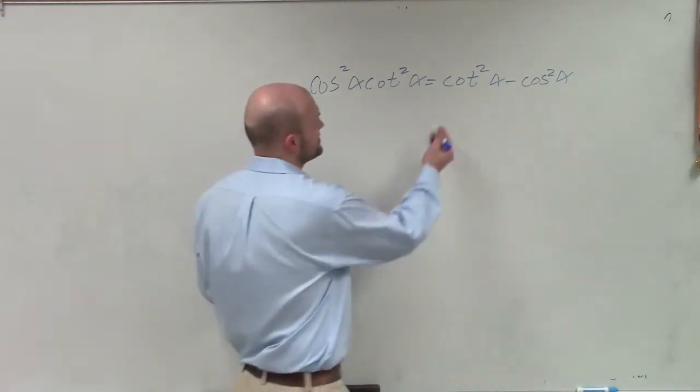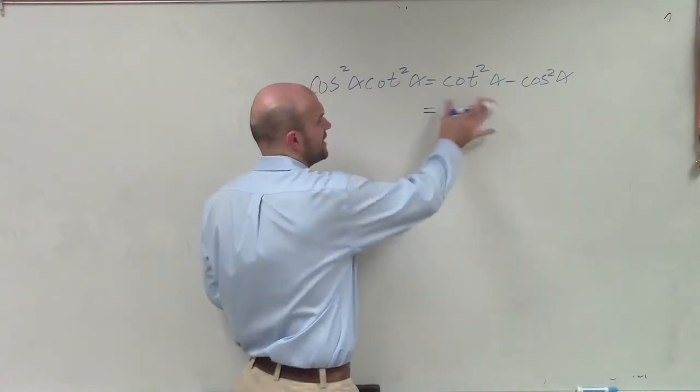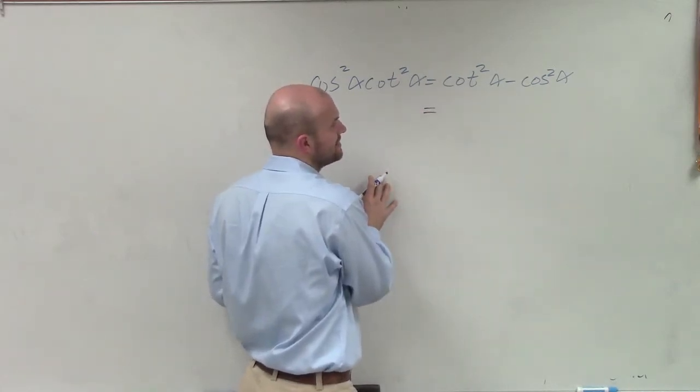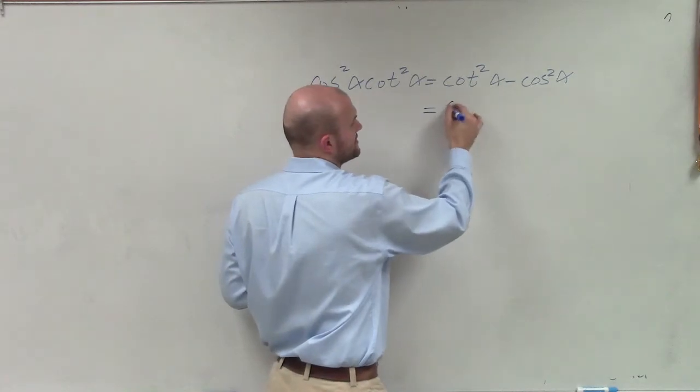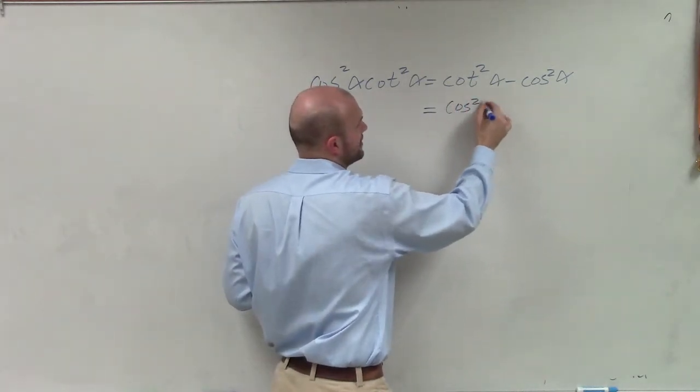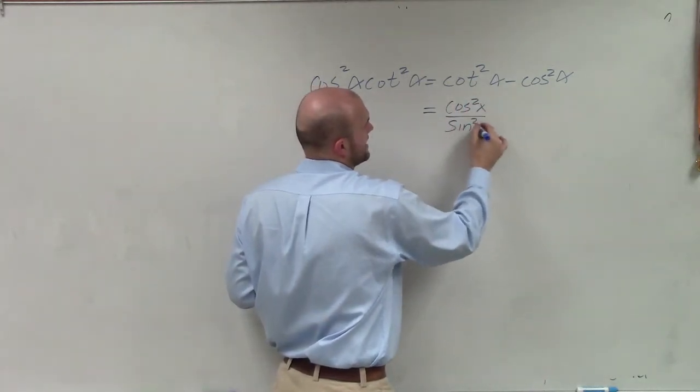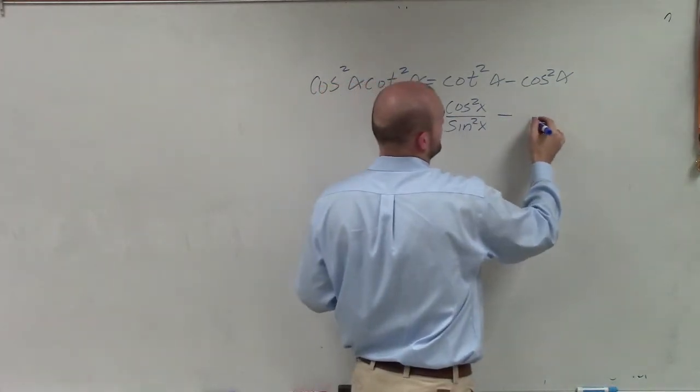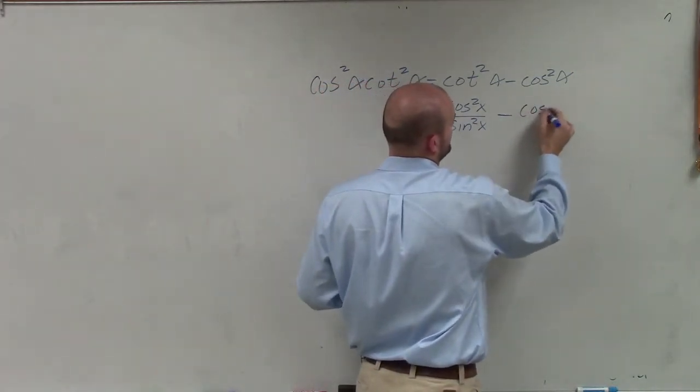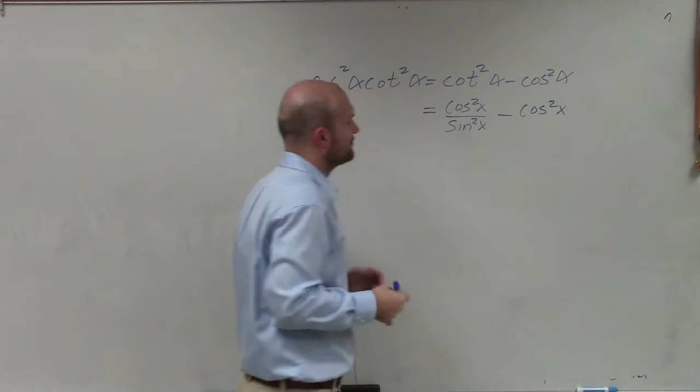And if I was going to simplify this right-hand side, what I would do is I would rewrite these in terms of sines and cosines, where this is going to be sine squared of x over sine squared of x minus cosine squared of x over 1.